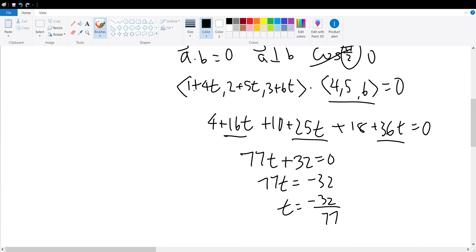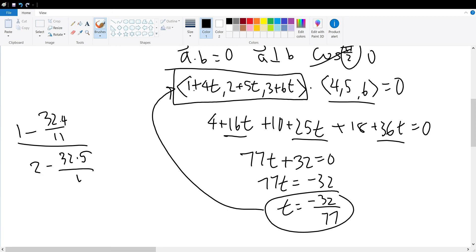And, since we have the value of t, we can apply this into our vector right here, to get our resulting vector, which is the shortest distance from our origin. So, we plug in, to get 1 minus, since plus minus becomes minus, 32 times 4, divided by 77, this will be the x component, 2 minus 32 times 5, divided by 77, to be our y component, and 3 minus 6 times 32, divided by 77, to get our z component, and hence, find out the point.